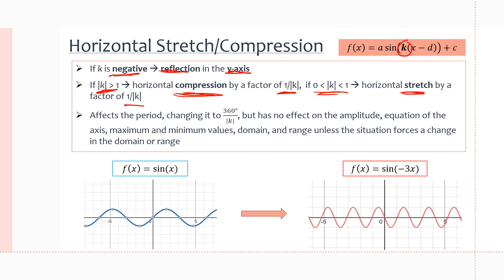So just remember: it is the exact reverse of vertical. If k is greater than one, it's a compression; between zero and one, it's a stretch — and the factor is 1/|k|, whereas with vertical stretch or compression the factor was just |a|.